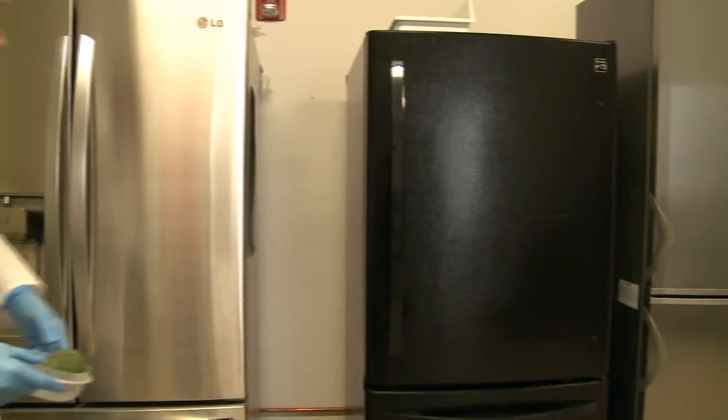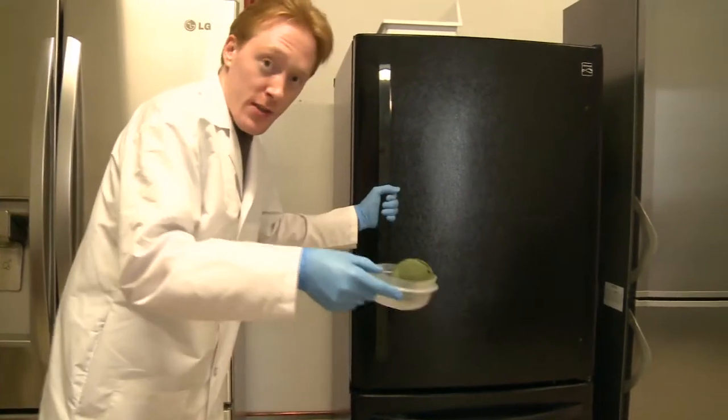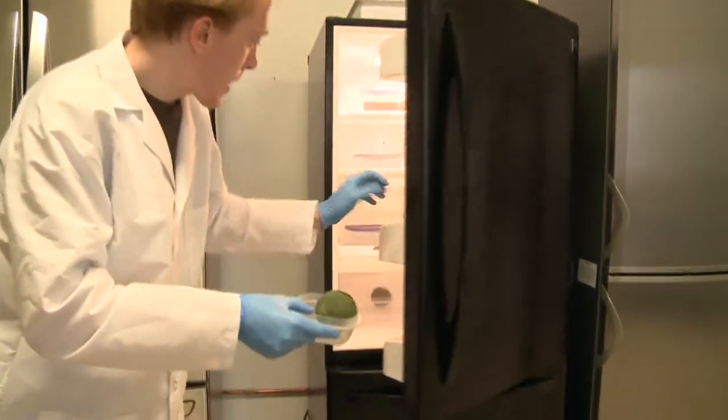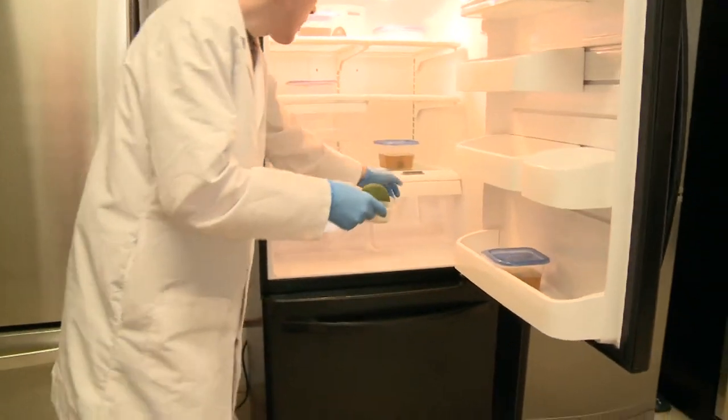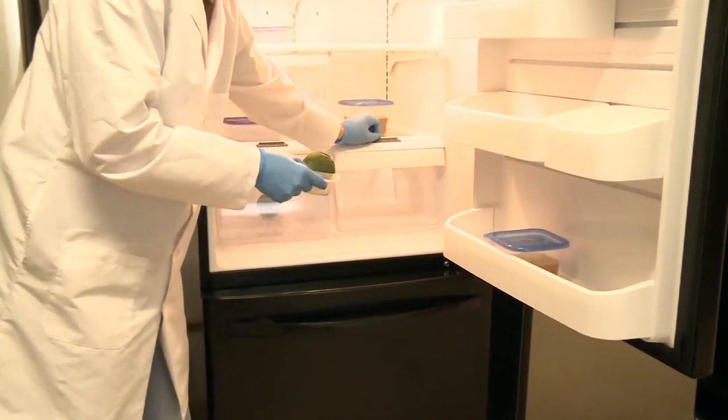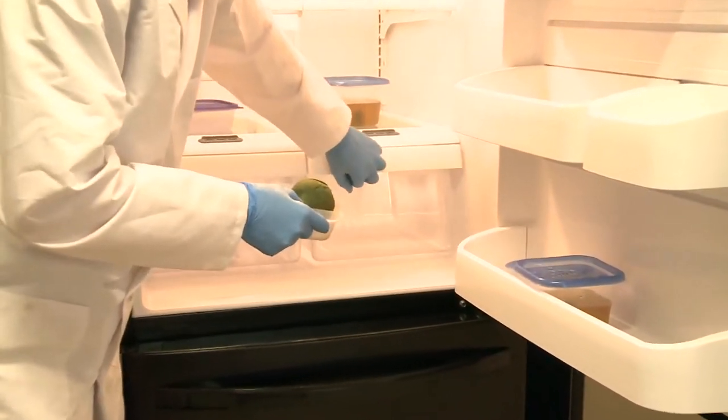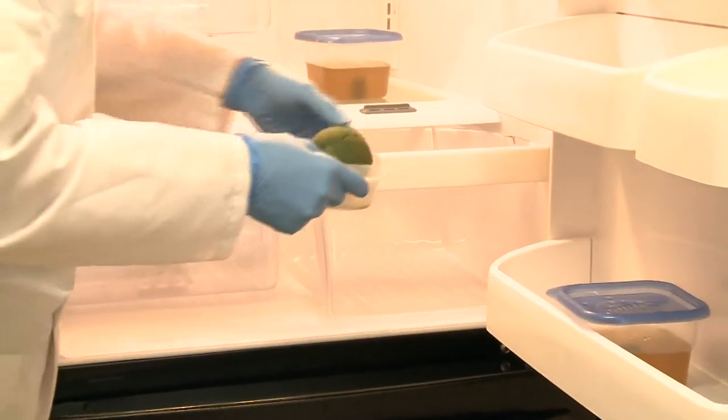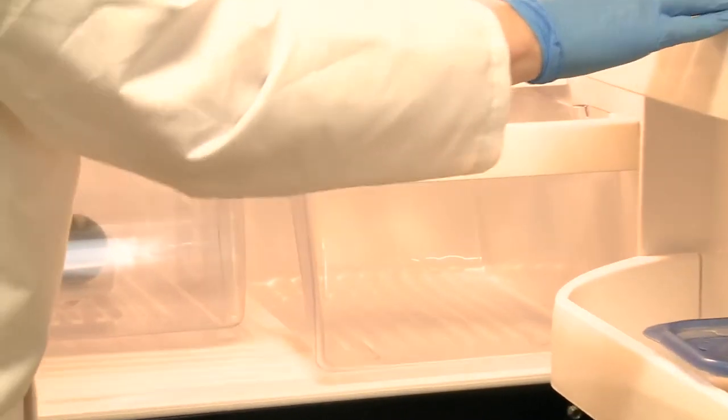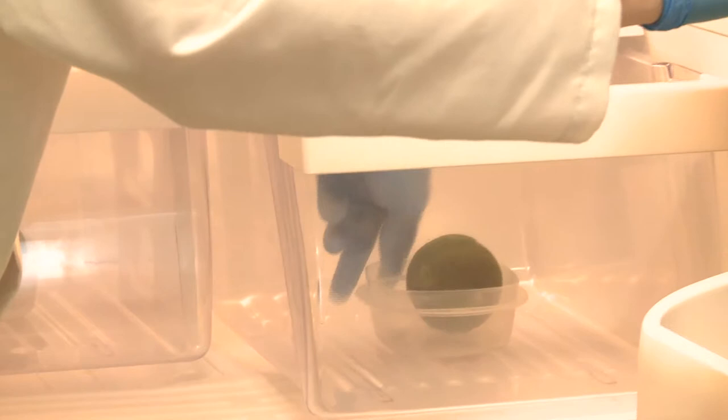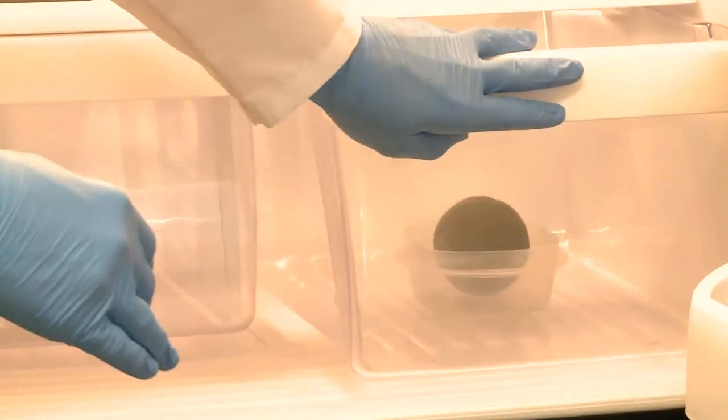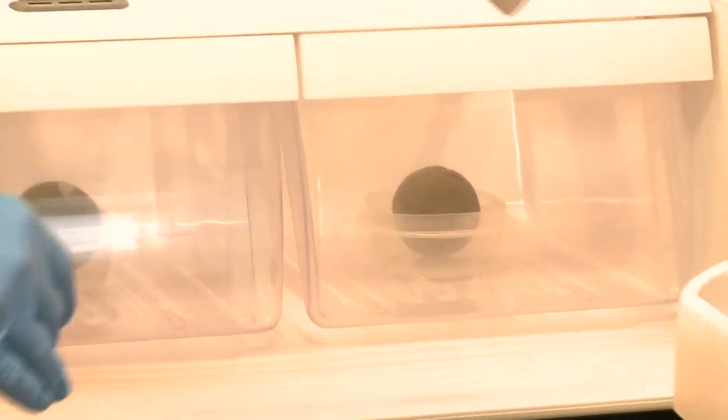So here we are again with the foam ball. We're back with our fridge here. We've got the humidity setting at the highest possible setting, which is usually for vegetable storage. The lowest setting is better for fruits. What we'll do is we'll put that just right in the middle of the drawer, shut the drawer, and then shut the fridge.